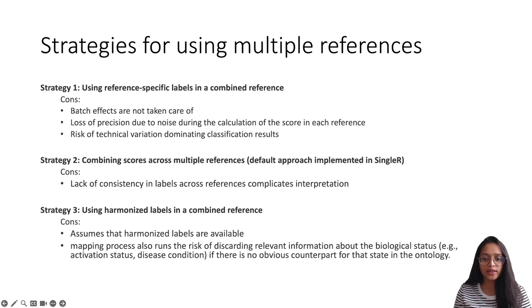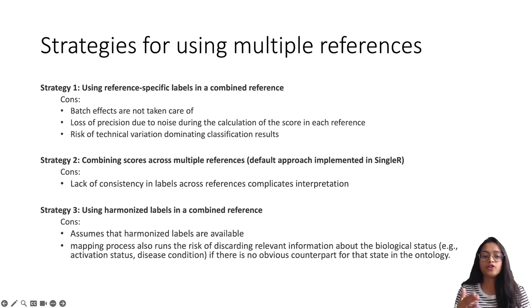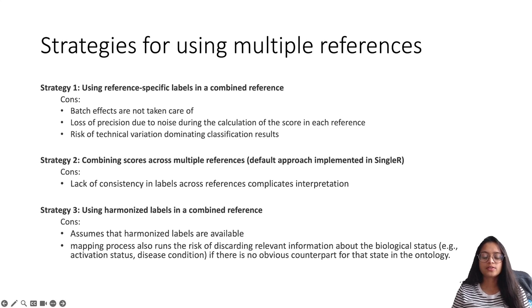It involves recomputation of scores across the identified marker subset across all labels from different references, ensuring that these scores are derived from the same set of genes. The function then identifies the overall best-scoring label as the final prediction for that cell. A key advantage is that the test dataset is compared and annotated with each individual reference, which avoids batch effects from comparing expression values across references. The per-reference annotation is also provided in the results, which is specifically helpful as it allows for more detailed diagnostics, troubleshooting, and further analysis. A major challenge with this strategy is the lack of consistency in labels across multiple references.